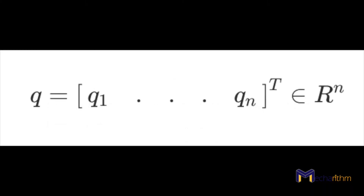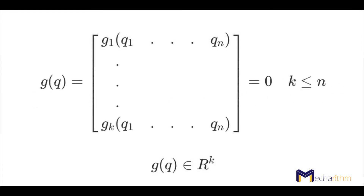In general, if we write the n-dimensional vector of robot configuration as the column vector q which belongs to R^n, then the loop closure equations for k independent equations — our k holonomic constraints — can be written in vector form as g(q) = 0, where each of the rows is one equation and g is a function of q1 to qn, which are the generalized coordinates. Note that k is always less than or equal to n, and g(q) belongs to a k-dimensional space.